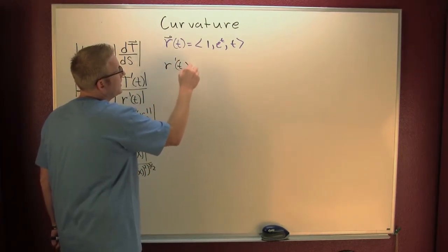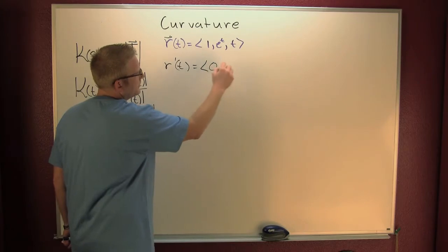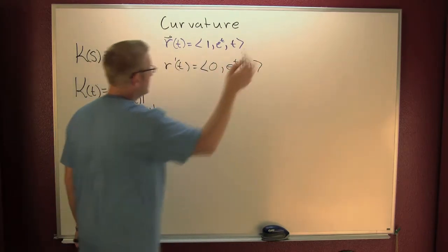Our prime of t. That going to be, that going to be zero, e to the t and one. Fine.